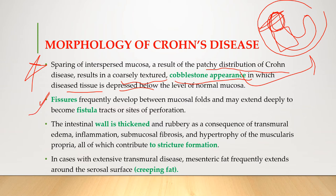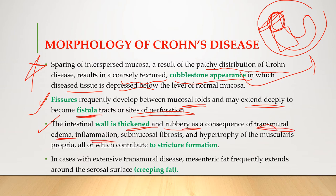Fissures frequently develop between mucosal folds and extend deeply to become fistulas, which can also lead to perforations. The intestinal wall is thickened and rubbery as a consequence of transmural edema, inflammation, submucosal fibrosis, and hypertrophy of the muscularis propria — all contributing to stricture formation, or narrowing of the intestinal canal.